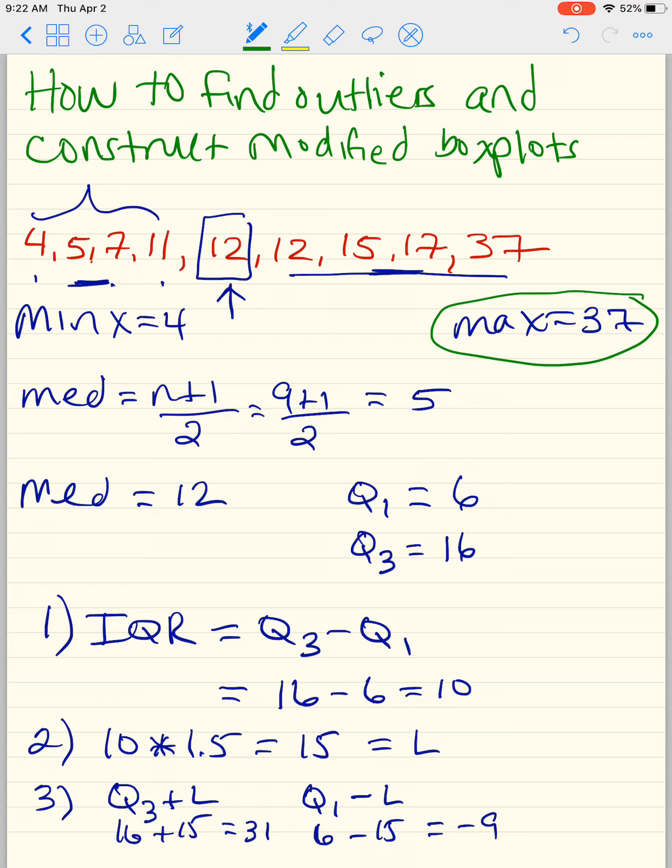We have Q1 to be 6, excuse me, the median to be 12. The median cannot be smaller than Q1, so that didn't make sense. And we have our minimum. This is our five numbers. So we have 4, 6, 12, 16, 37.